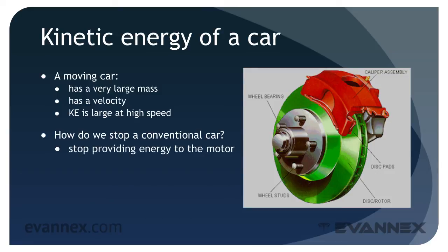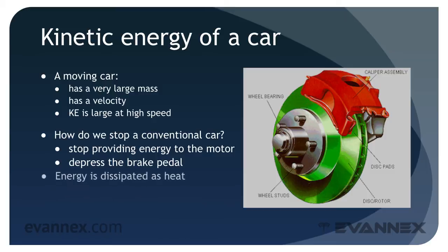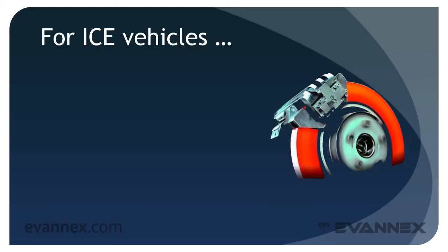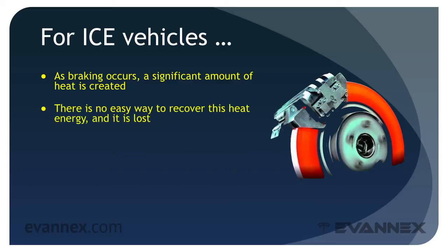First, you stop providing energy to the motor, thereby allowing air friction drag to slow the car. Next, you depress the brake pedal. Calipers press on discs and create friction that slows the rotation of the wheels. Energy is dissipated as heat. As braking occurs, a significant amount of heat is created. There is no easy way to recover this heat energy in a conventional automobile, and it is lost.